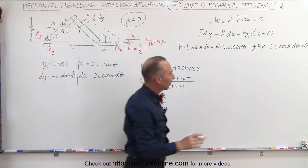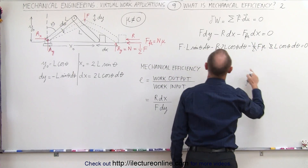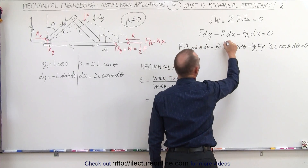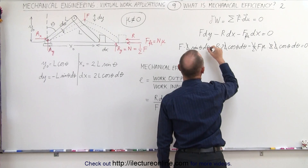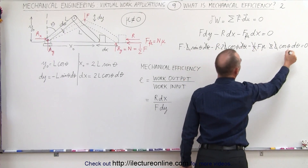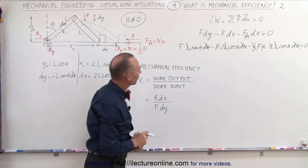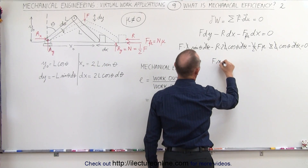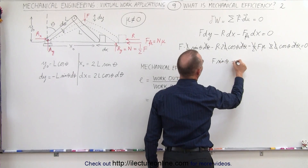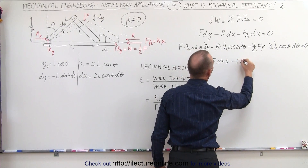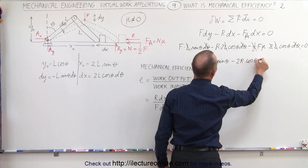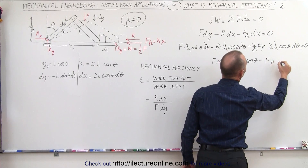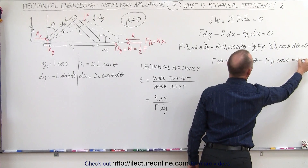Simplifying: we have a one-half and a 2 that cancel, and all terms have an l and a d theta, so we can divide both sides by l and by d theta. That leaves us with f times sine of theta, minus 2r times cosine of theta, minus f times mu times cosine of theta, equal to zero.